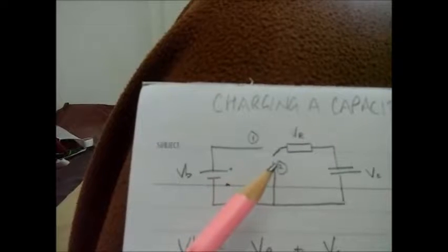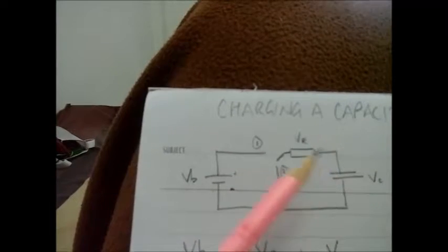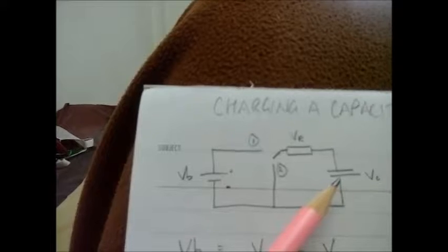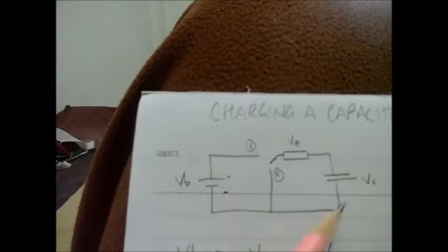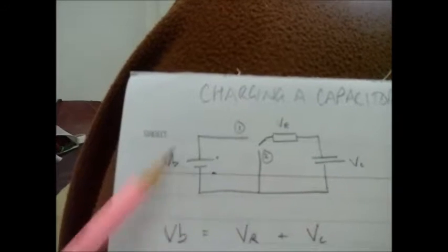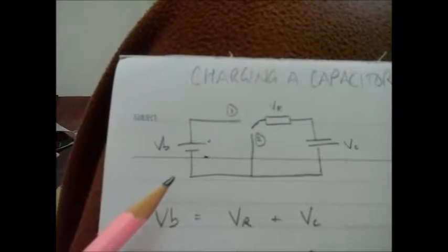If I put the switch in position 2, the charged capacitor will discharge. And all the charge will want to get to the other plate going around that loop there. So a simple diagram for charging a capacitor.